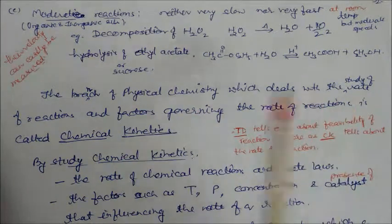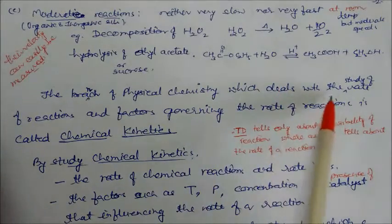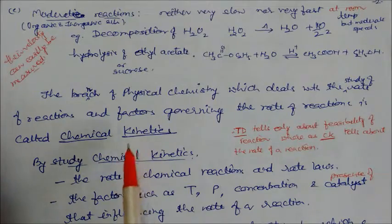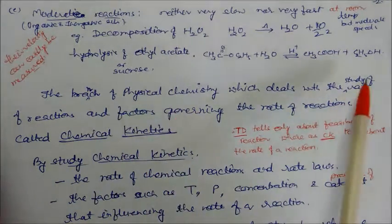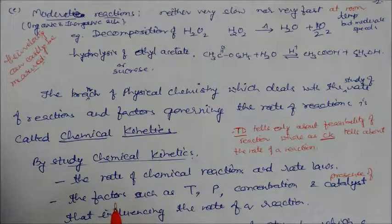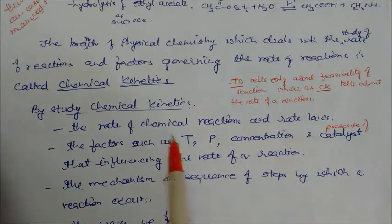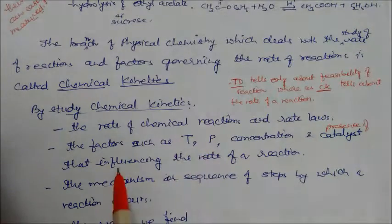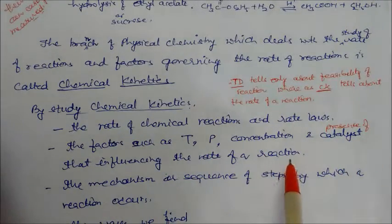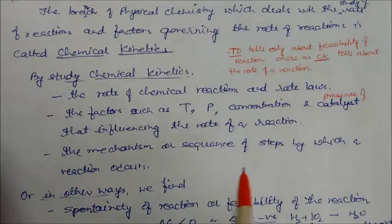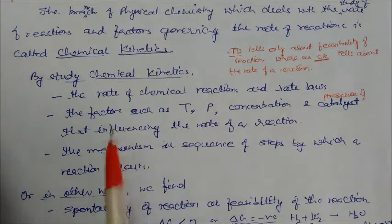The branch of physical chemistry that deals with the study of the rate of reaction — slow rate, fast rate, and moderate rate — and the factors governing the rate of reaction is called chemical kinetics. We study only moderate reactions, not very slow or very fast reactions. By studying chemical kinetics, you will come to know: the rate of chemical reactions and rate laws; the factors affecting the rate of reaction such as temperature, pressure, concentration, and presence of catalyst; and the mechanism, which is the sequence of steps by which reactions occur.